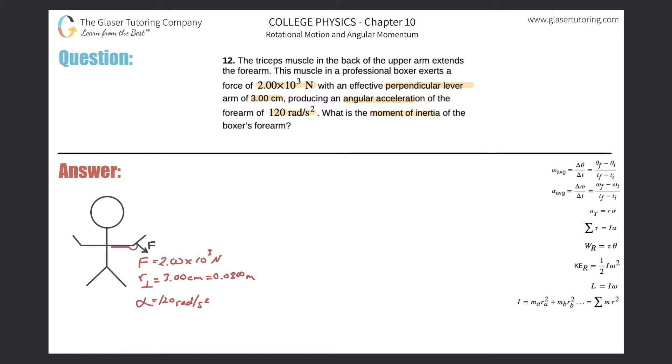It also tells us the effective perpendicular lever arm is three centimeters. Make sure you convert that into meters, 0.03 meters.